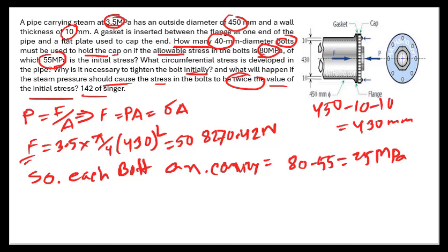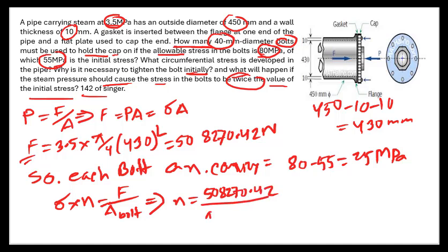We know the formula: stress × n = F / area of bolt. So n = F / (stress × bolt area). That is n = 5827.42 / (25 megapascal × π/4 × 40²), which gives us 16.7, approximately 17 bolts.